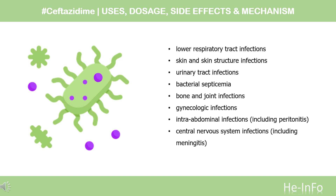Ceftazidime is indicated in combination with avobactam to treat infections caused by susceptible gram-negative organisms, including complicated intra-abdominal infections (cIAI) in connection with metronidazole, and complicated urinary tract infections (cUTI) including pyelonephritis in patients aged 3 months and older. This combination is also indicated to treat hospital-acquired and ventilator-associated bacterial pneumonia (HABP/VABP) in patients aged 18 and older.